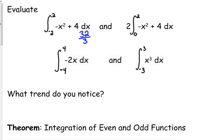It's 32 over 3, and the second one is also 32 over 3. So what is the difference between those two integration problems? The second one is half the interval and we multiply it by 2.